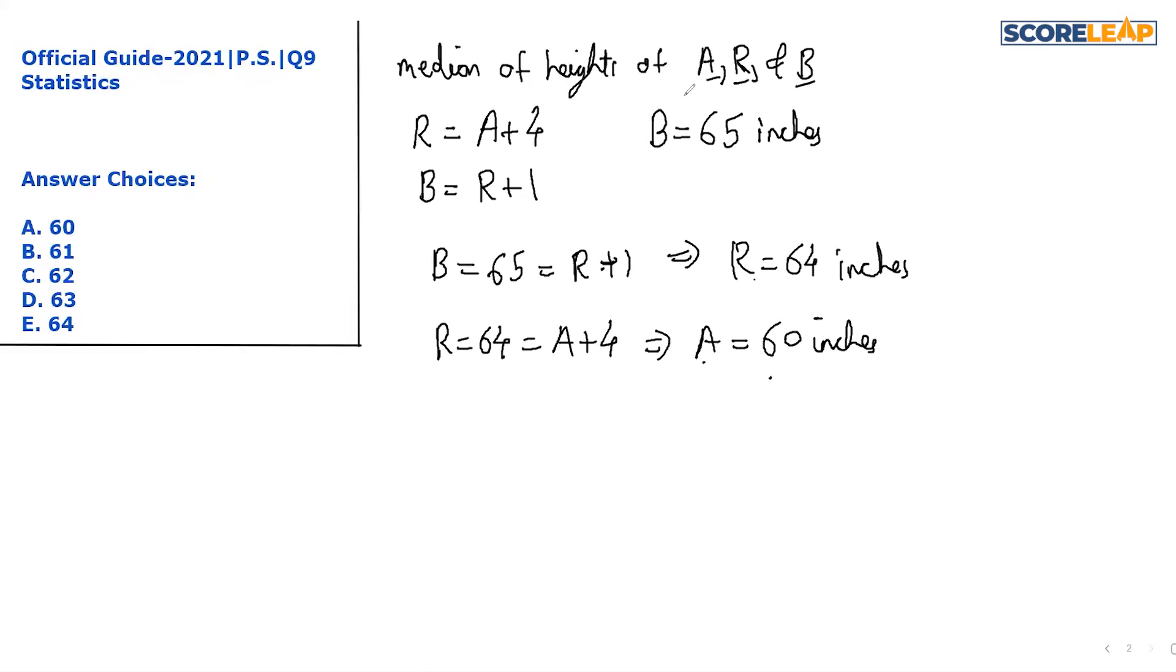We are told to find out the median of the heights of the three. So whenever we are asked to find out the median, we first arrange them in ascending order. So ascending order will be 60, 64, and 65.